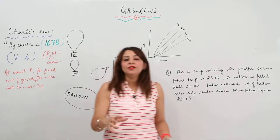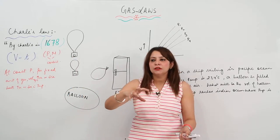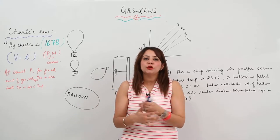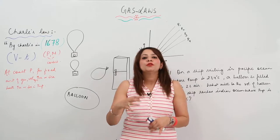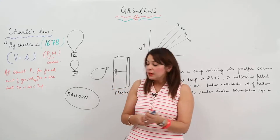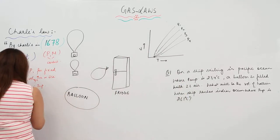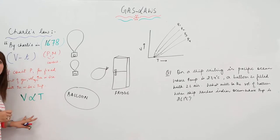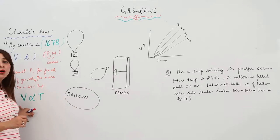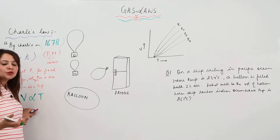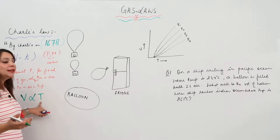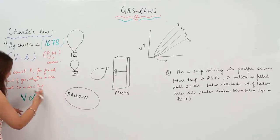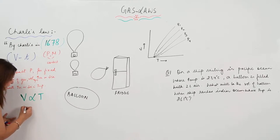Keeping pressure constant and mass of gas fixed, when you increase the temperature the volume of gas also increases, and if you decrease the temperature the volume of gas also decreases. So we can say that volume is directly proportional to temperature — it varies directly.